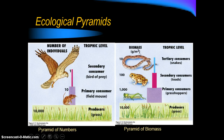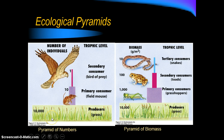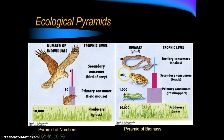Whether we compare the number of individuals or the biomass at each level, a clear pattern emerges. If producers start with 10,000 individuals, primary consumers number only about 10, and secondary consumers might number only one. In the biomass pyramid, if we start with 10,000 g/m² of biomass, the grasshoppers feeding on that grass make up about 1,000 g/m², the frogs or toads about 100 g/m², and the snakes — tertiary consumers — about 10 g/m².